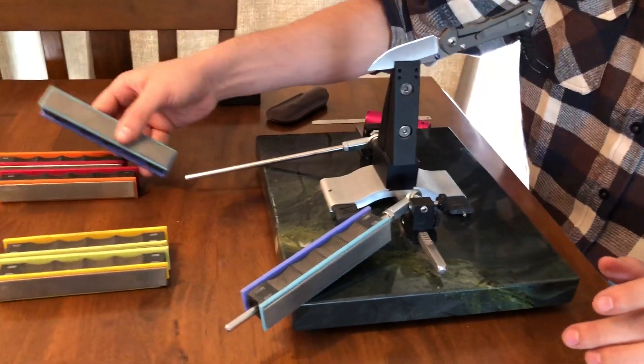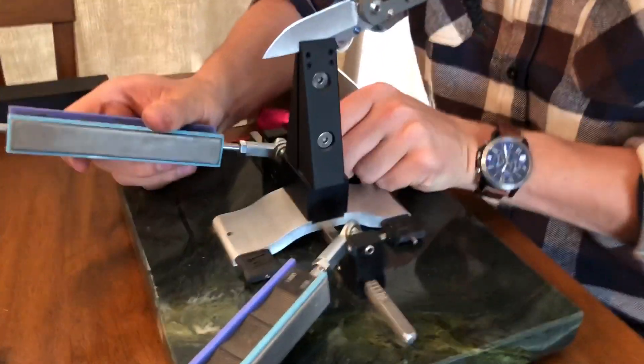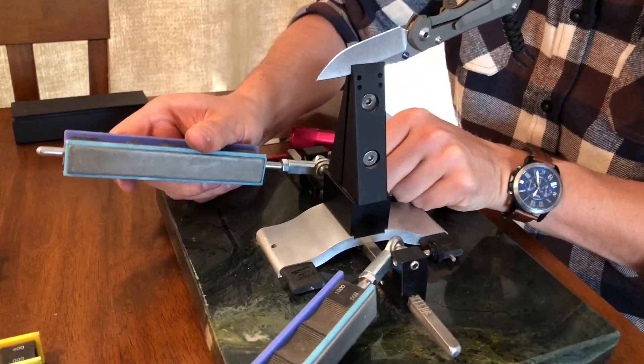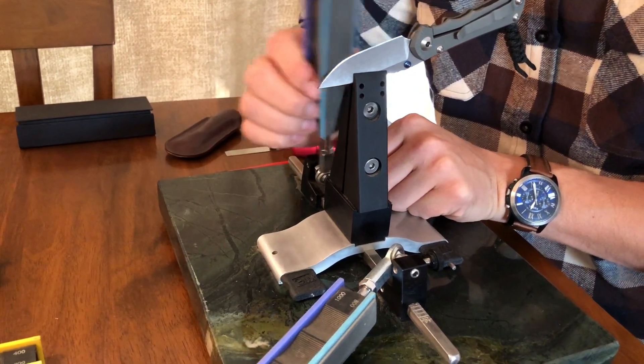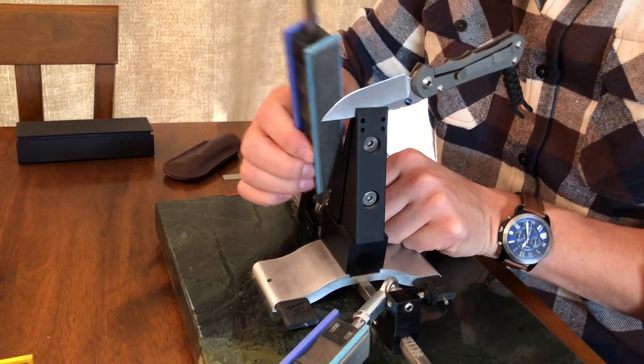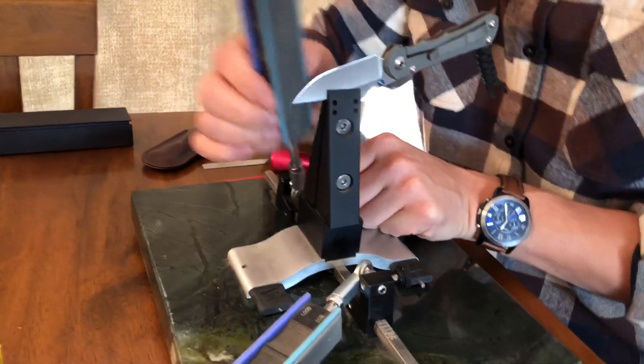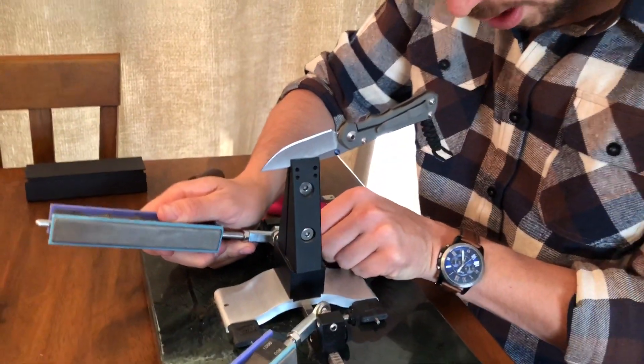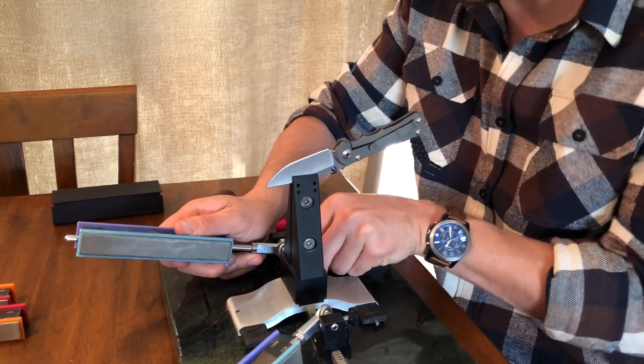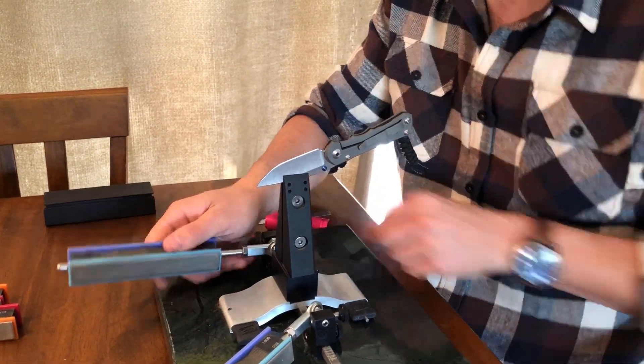I'm just going to test the angle on the opposite side to make sure it's correct as well. It should be pretty close but I always like to check one side differently than the other and not just assume that both sides are the same angle. That looks really good at 18 degrees so this knife is the same angle on both sides.